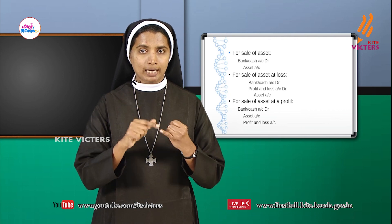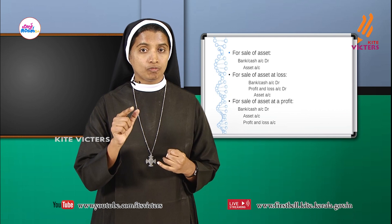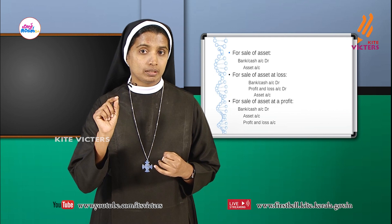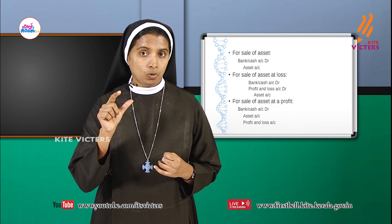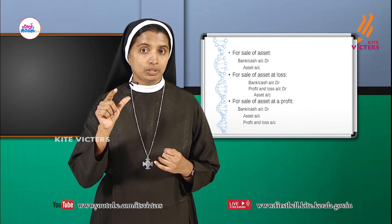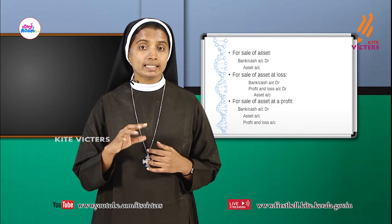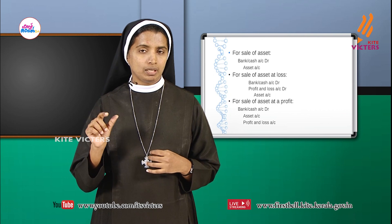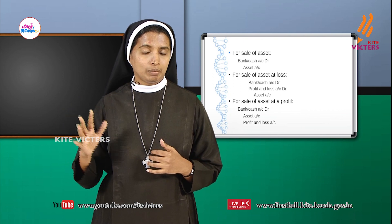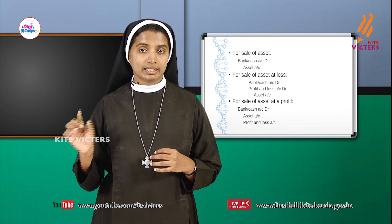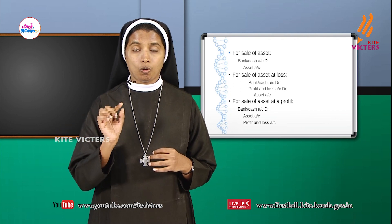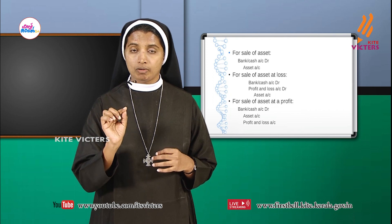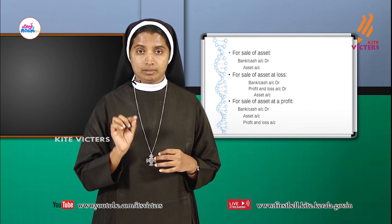The journal entry for sale of asset at a loss is: bank or cash account debit for ₹8,000, profit and loss account debit for ₹2,000 — to asset account, because the asset is reduced and goes out on the credit side.